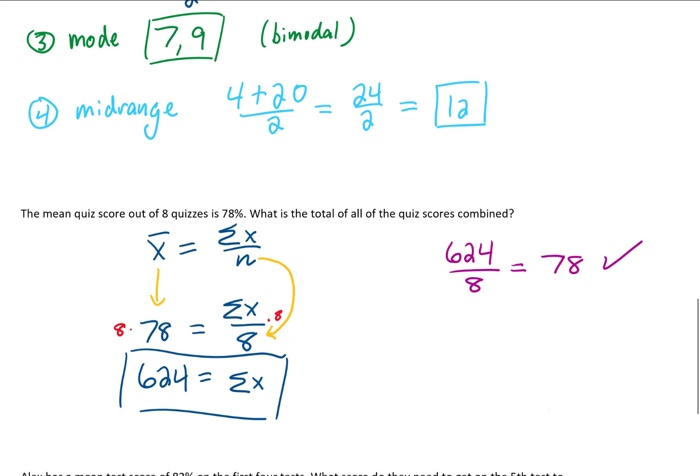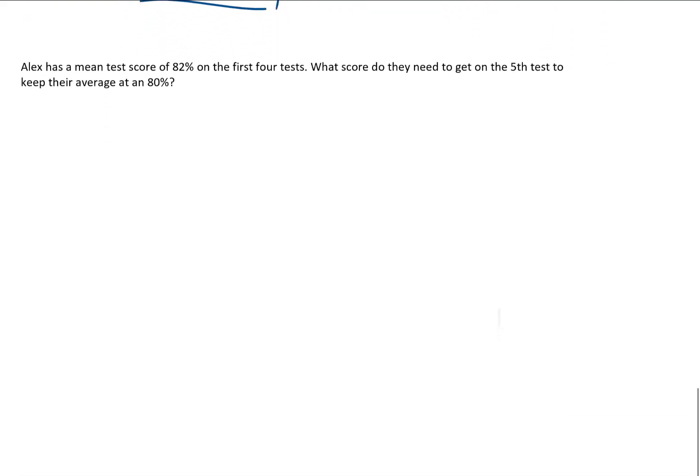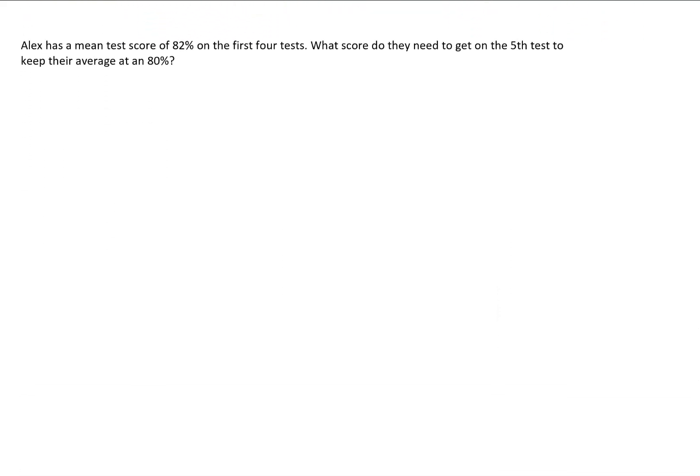Let's take a look at another example problem. Alex has a mean test score of 82% for their first 4 tests. What score does Alex need to get on the 5th test to keep an average of 80%? Typically when we use the word average in English, we're talking about a mean.